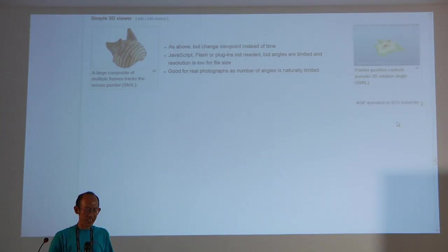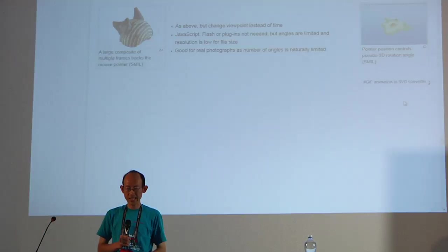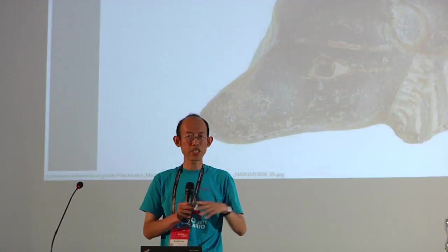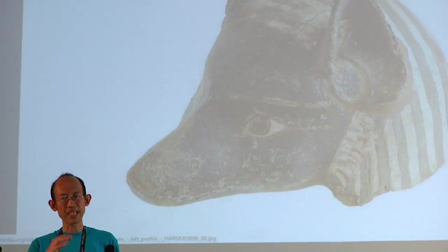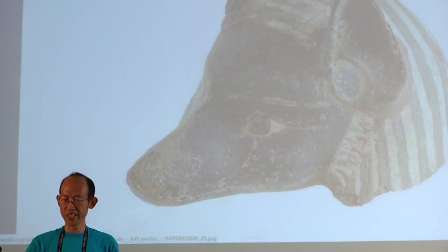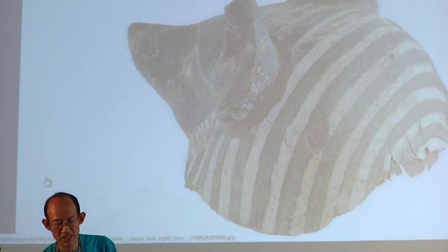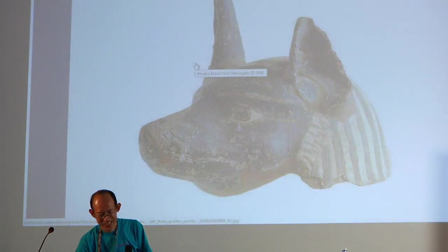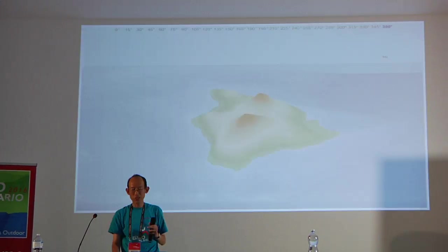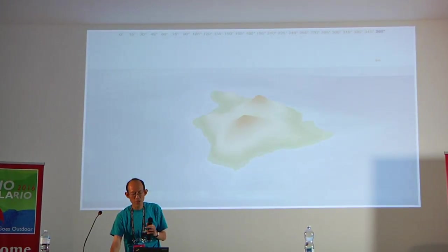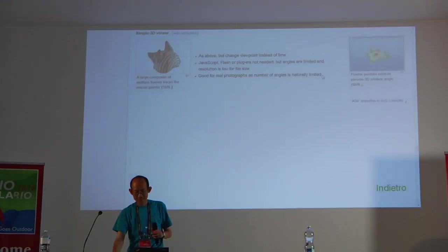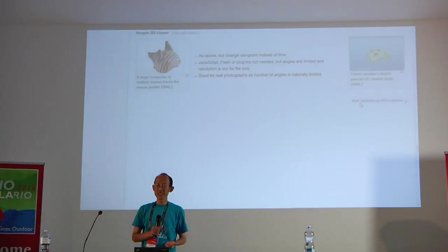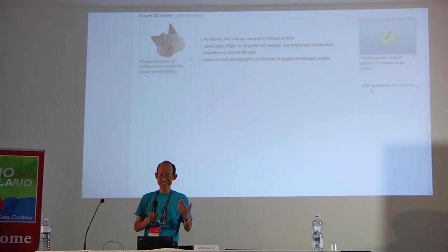Simple 3D viewer: one idea I've had, having spoken with people who work with GLAM, is to scan artifacts with a turntable. When you have pictures of artifacts from different angles, you can rotate them virtually, allowing viewers anywhere to examine an artifact without going to the museum. You could also explore geographical features — for example this is the island of Hawaii, you can rotate around and see Mauna Kea and Mauna Loa.